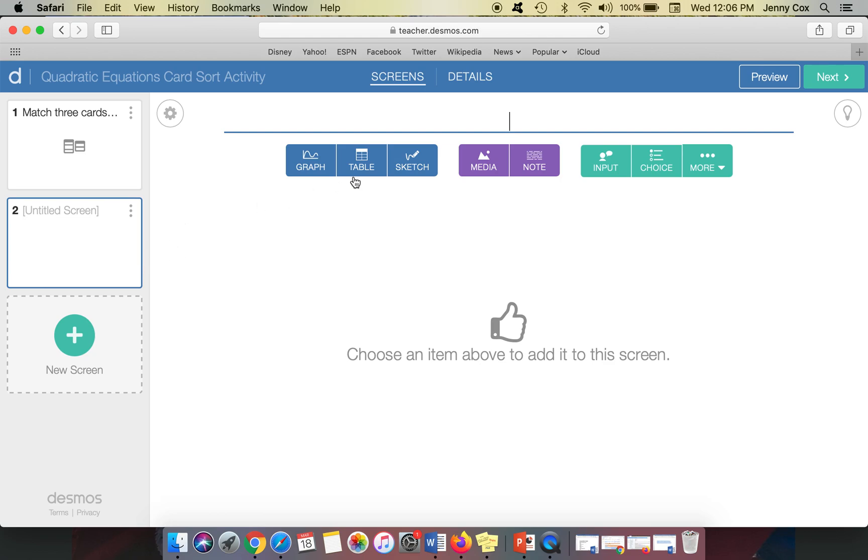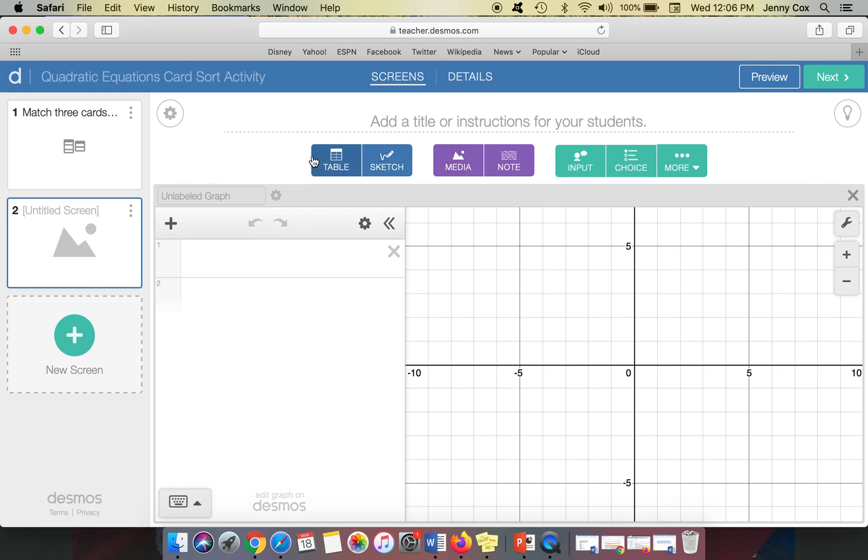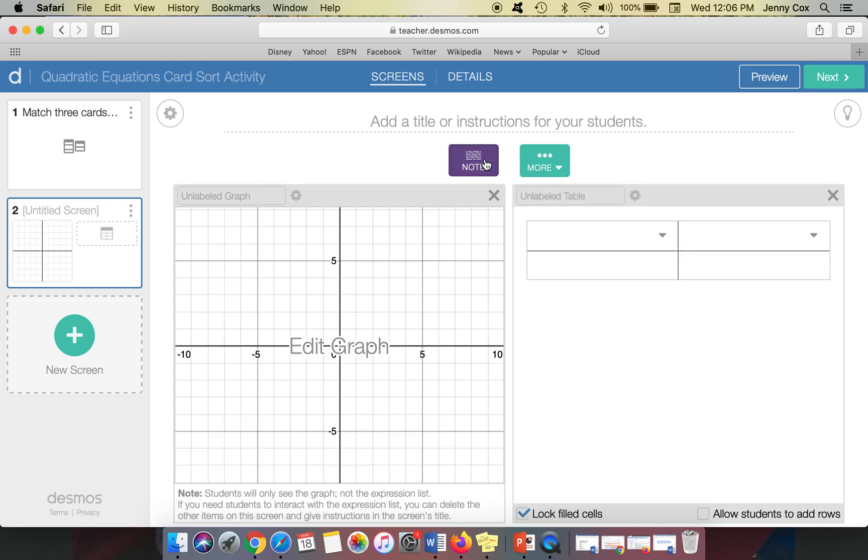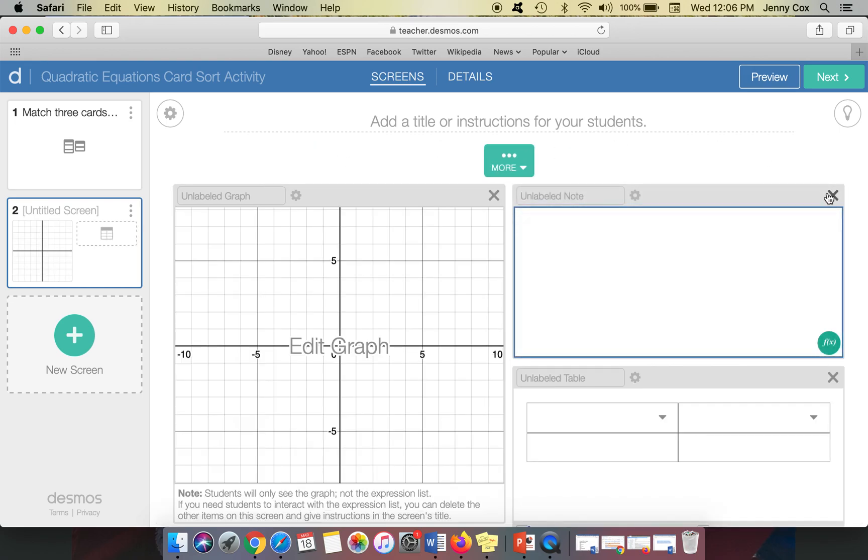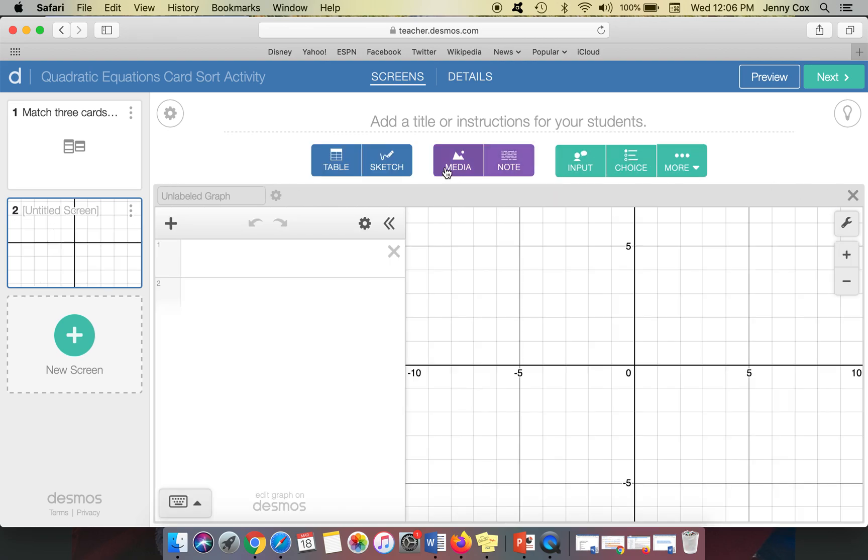So with activity builder, you want to be able to add graphs, maybe a table of values. You could add a note and so on. So we have lots of different options along here.